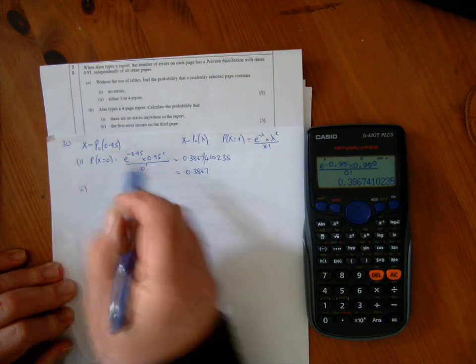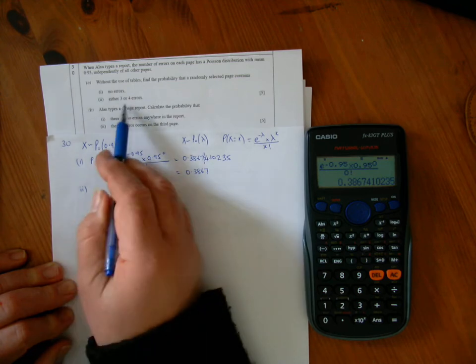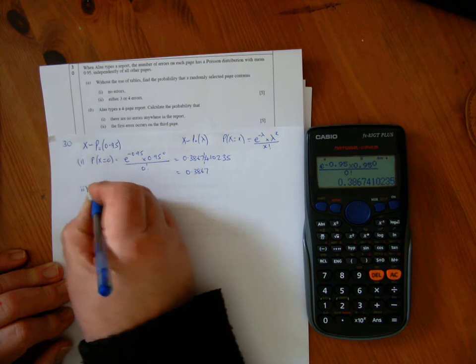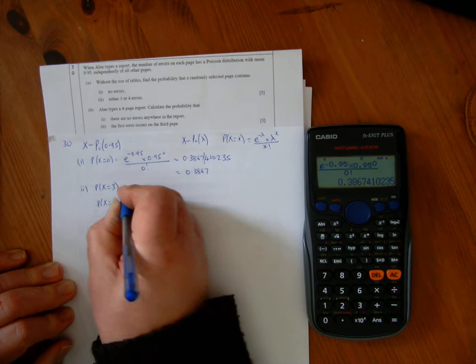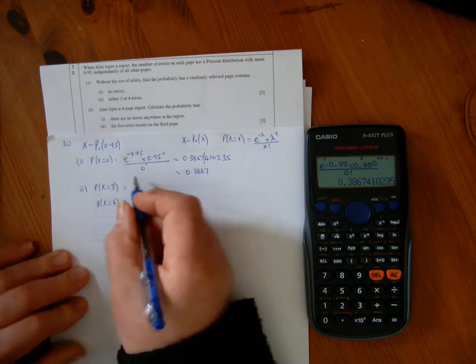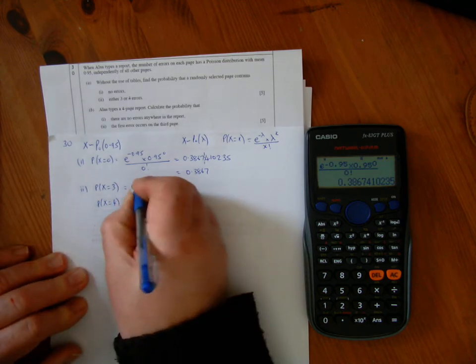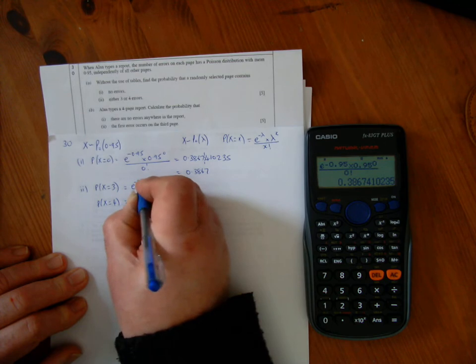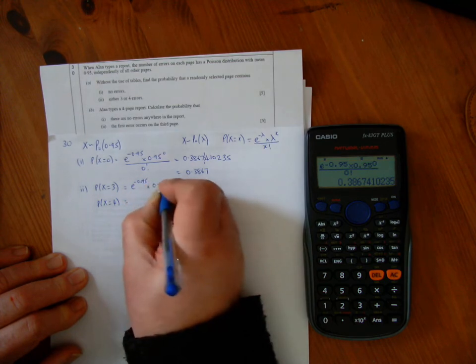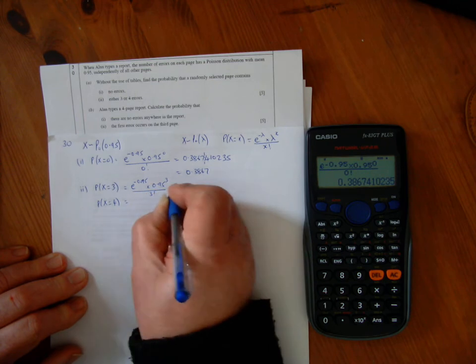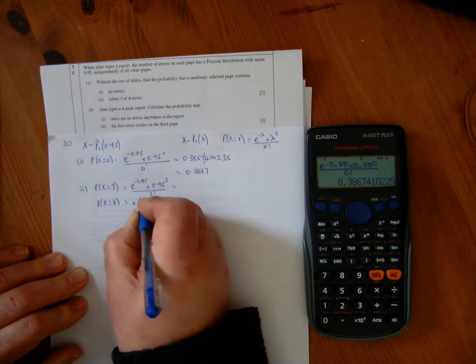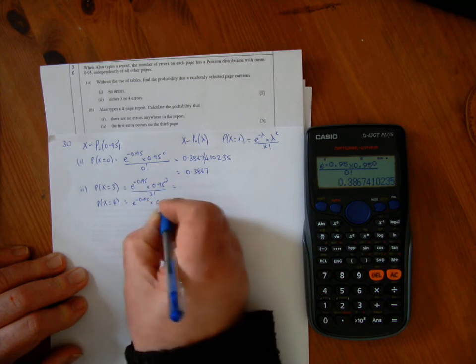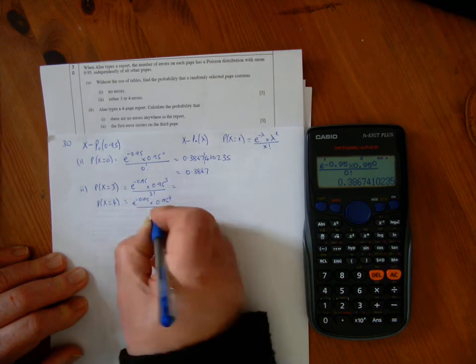Second part: probability of either 3 or 4 errors. When I see 'or', I'm adding—so probability X equals 3 or probability X equals 4. For 3, it'll be e to the minus 0.95 times 0.95 to the power of 3 over 3 factorial. And for 4, e to the minus 0.95 times 0.95 to the power of 4 over 4 factorial.